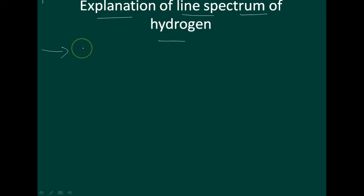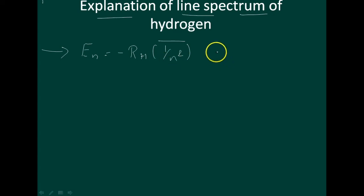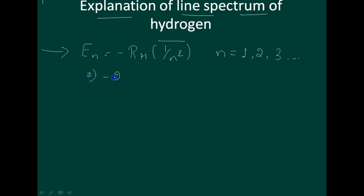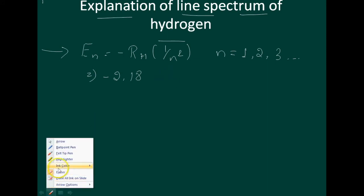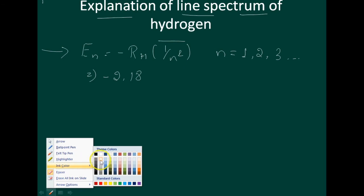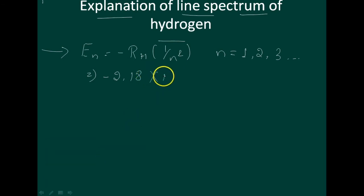The equation is: En is equal to minus RH divided by n squared, where n is equal to 1, 2, 3, and so on. Here RH is called the Rydberg constant, and its value is minus 2.18 into 10 to the power of minus 18.